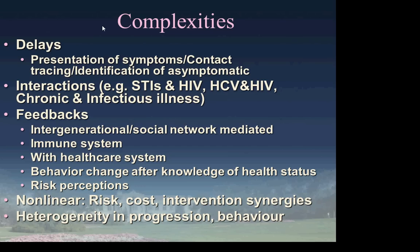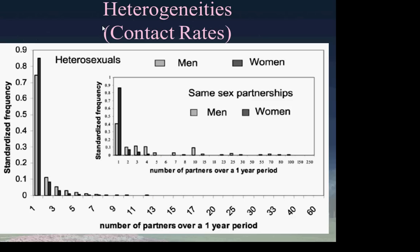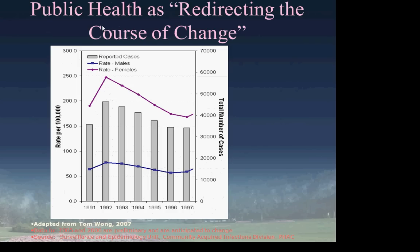Taken together, these complexities really bedevil our planning in the public health area. Another big issue is heterogeneity — there are very pronounced differences in individual behavior out there in the world, which lend themselves to differences between groups. This graph shows the number of partners individuals have over a one-year period from one study of STIs, for both same-sex and opposite-sex partnerships. While most individuals are clustered with fewer partners, some have many — especially in the same-sex context.